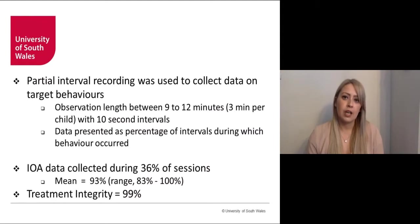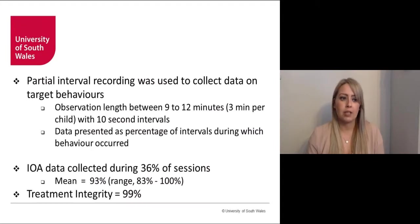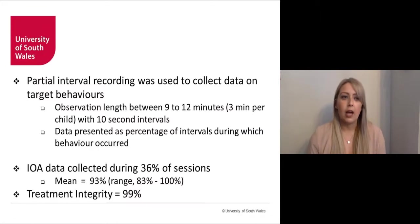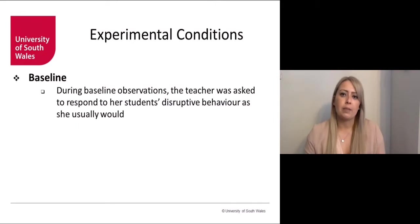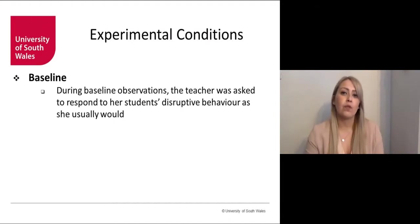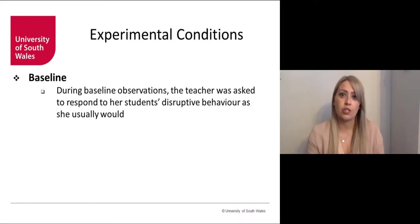To measure treatment integrity, a 10-item checklist was developed that included all steps required to play the game — such as whether the teacher announced when the game was beginning and whether she awarded points on an appropriate schedule. I'll refer to the interdependent group contingency condition as the team game and the independent group contingency condition as the individual game, as that's how we referred to the conditions with the teacher.